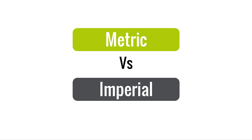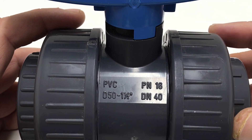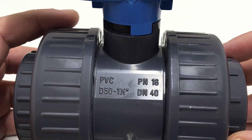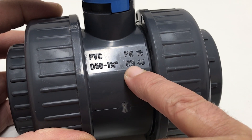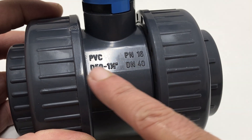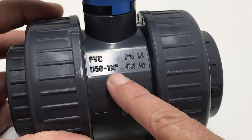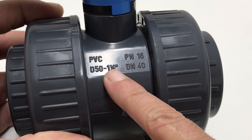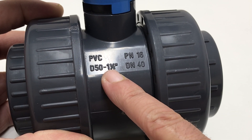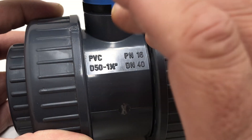To further complicate matters, here in the UK we have two systems in common use: the metric and imperial systems. DN numbers are part of the metric system, but don't assume that because a part is marked with a DN number that you need metric. Looking at this valve, for example — it is marked with a DN number but also marked with other markings that relate to size compatibility. It has both imperial and metric size designations.